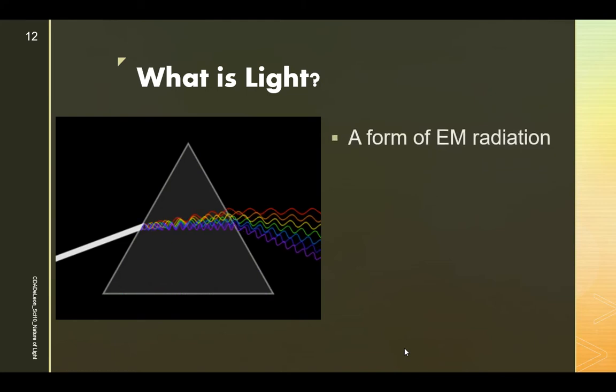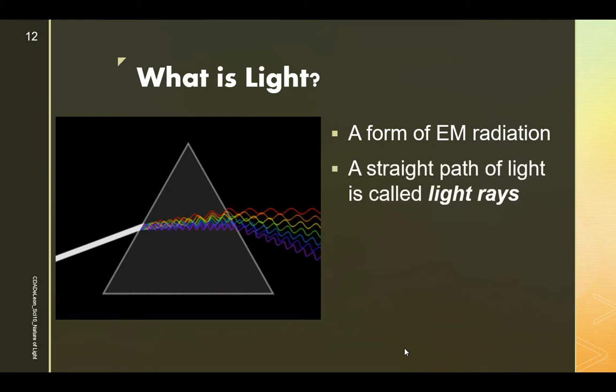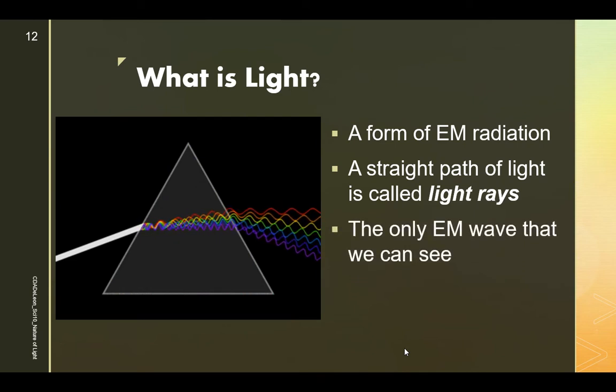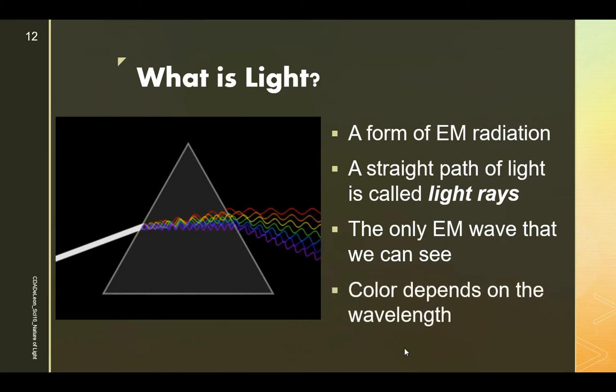So what is light? Light is a form of electromagnetic radiation. A straight path of light is called light rays. It's the only electromagnetic wave that we can see, and the color depends on the wavelength.